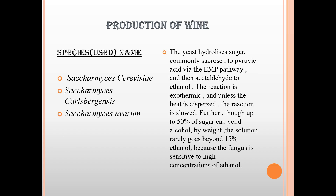The three main alcohol products are beer, wine, and spirits. The species used include Saccharomyces cerevisiae, Saccharomyces pastorianus, and Saccharomyces uvarum. They hydrolyze sugars, commonly sucrose, to pyruvic acid via the EMP pathway and then convert acetaldehyde to ethanol. The reaction is exothermic, and up to 50% of sugar can yield alcohol. The solution rarely goes beyond 50% ethanol because the fungus is sensitive to high concentrations of ethanol.